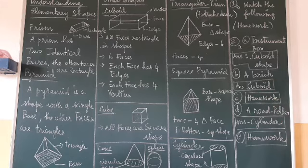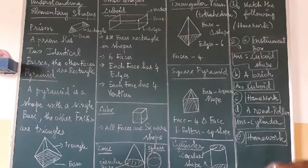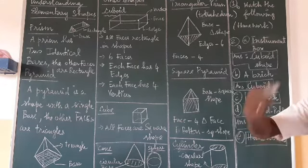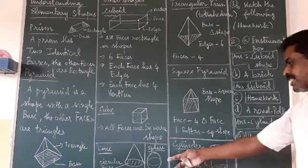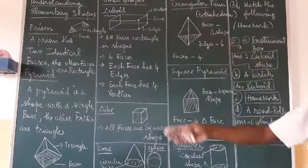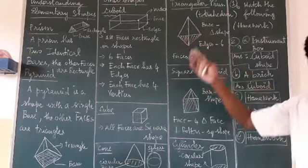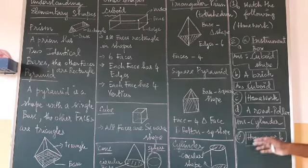Bricks used in construction are also cuboid-shaped. A matchbox is cuboid as well, since all its sides are rectangular. A road roller is cylindrical — it has a cylindrical form with circular sides. Ladoo is sphere-shaped. Take the road roller and ladoo questions as homework. This completes chapter five. Please also start writing your workbook for chapters one through five.